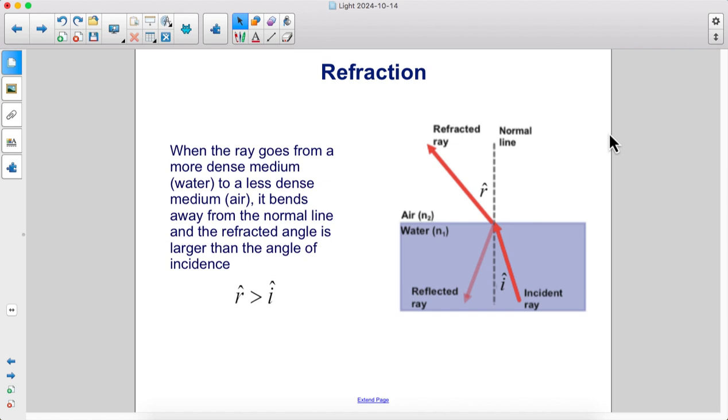When the ray goes from a more dense medium to a less dense medium, it bends away from the normal line, and the refracted angle is larger than the angle of incidence. Going from water into air, you can see the angle of incidence is smaller than the angle of refraction.